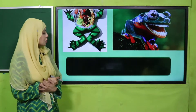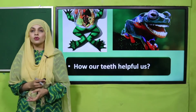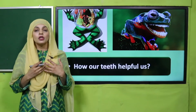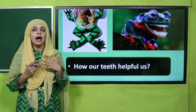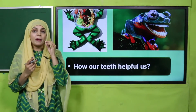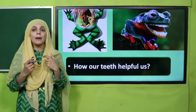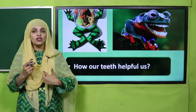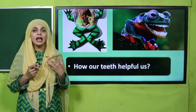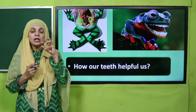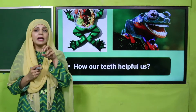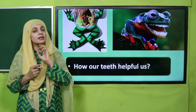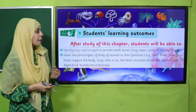Now is the time for an activity. Look at the pictures very carefully — here you can see a frog. Think about how our teeth help us. When you eat food, your teeth play a very important role. These teeth help us in chewing the food, gripping the food, and tearing the food.